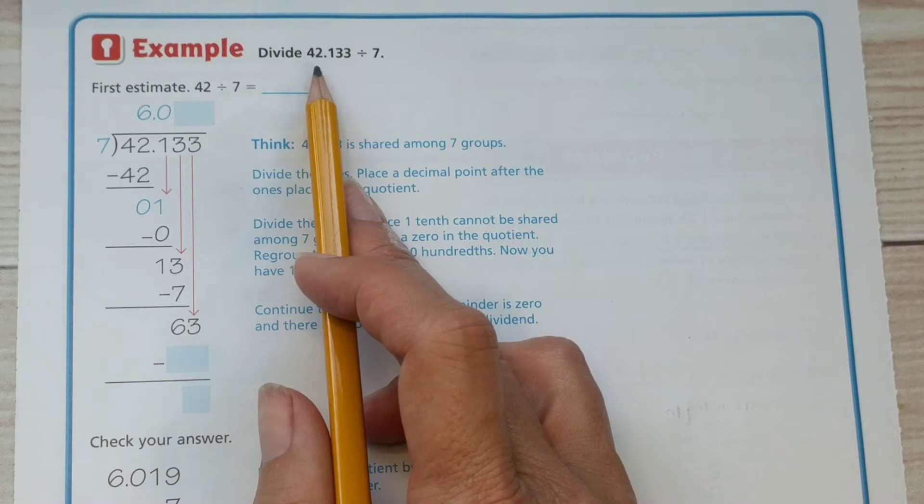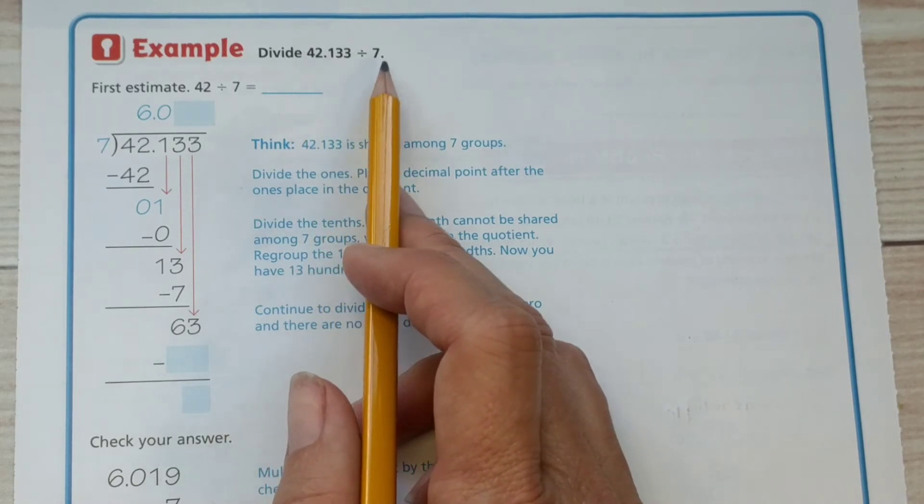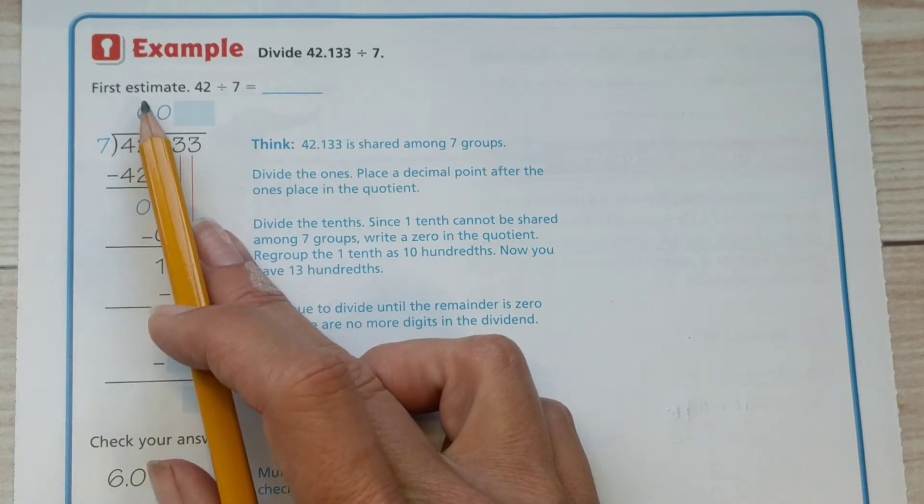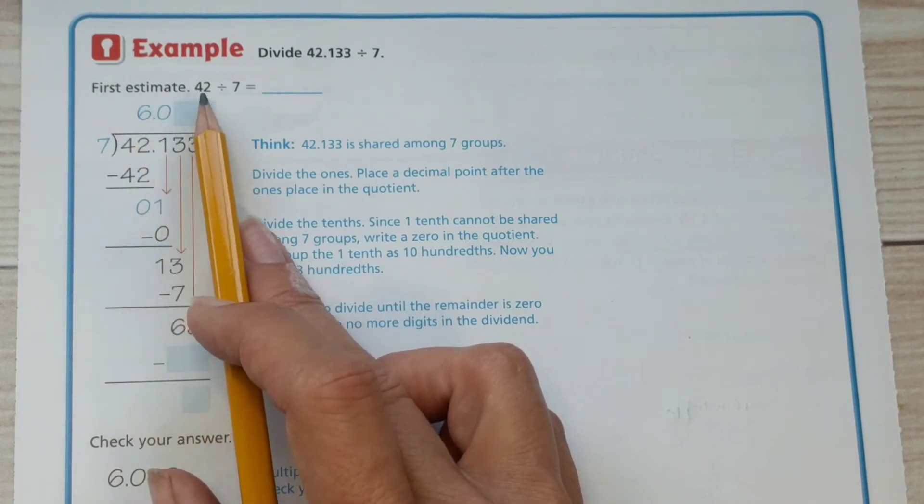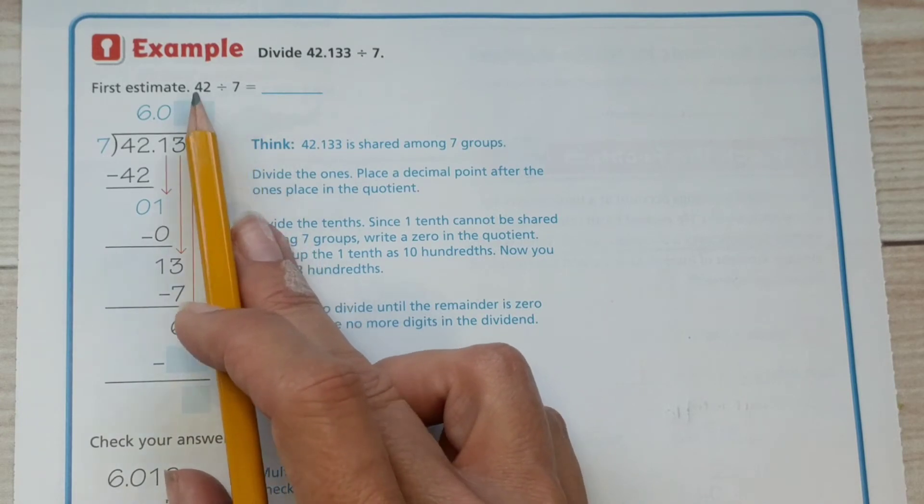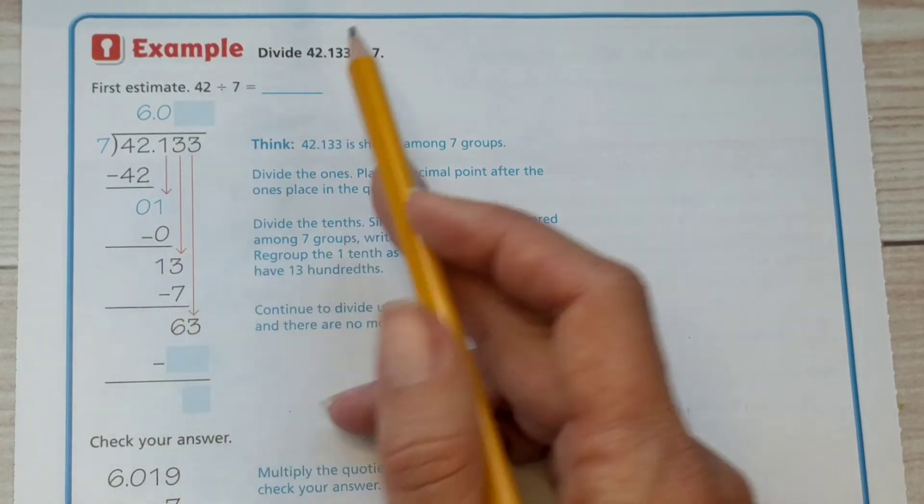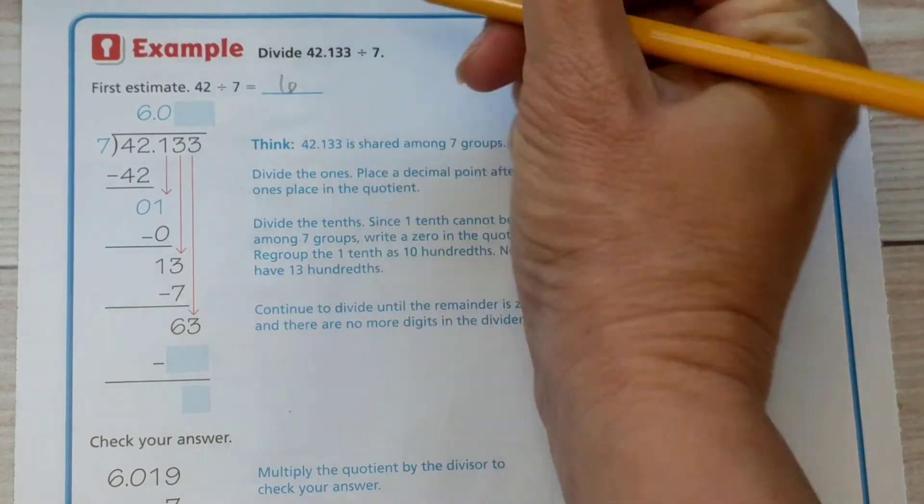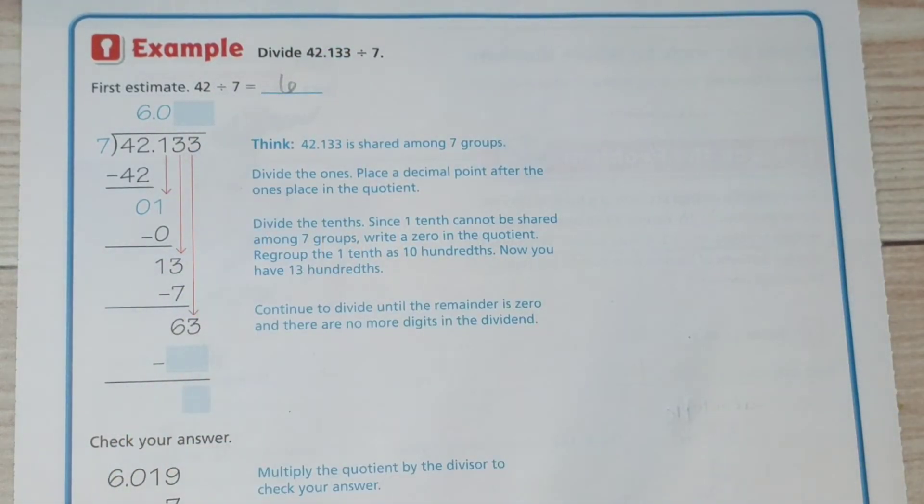We're going to divide forty two and one hundred thirty three thousandths by seven. So first we're going to estimate. And forty two and seven are compatible numbers because seven goes into forty two evenly six times. So that's why they chose those two numbers for the estimate.